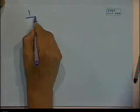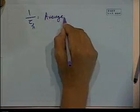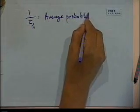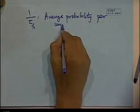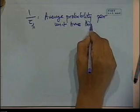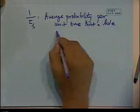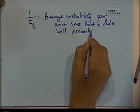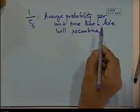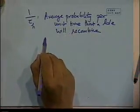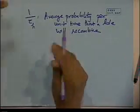We don't call it majority carrier lifetime because once the hole is trapped in a recombination center, there are plenty of majority carriers available. The lifetime is related to how many trapping and recombination centers are available for the hole. We'll take up the idea of lifetime in more detail next time.